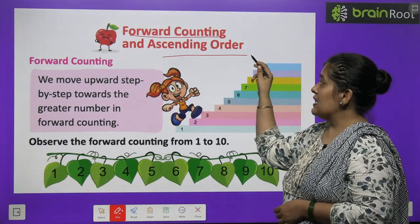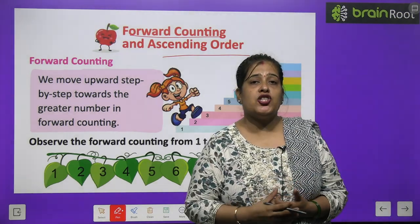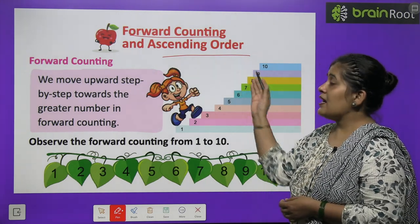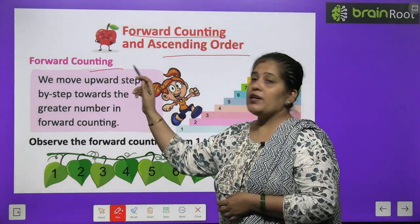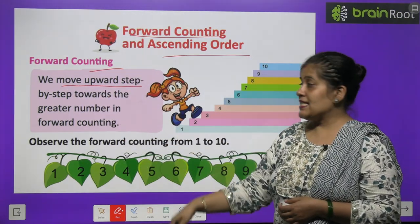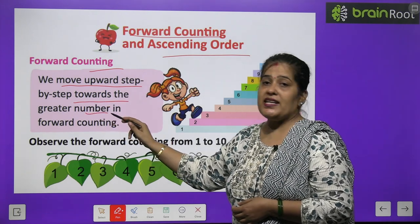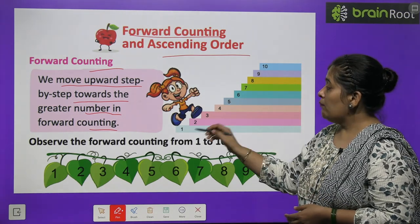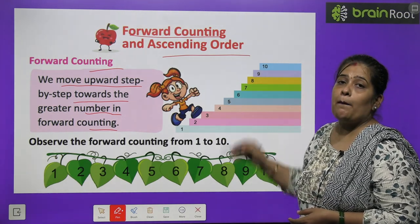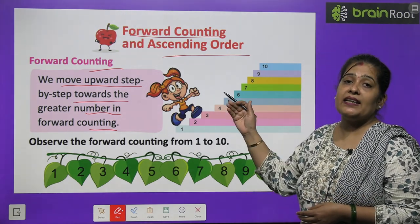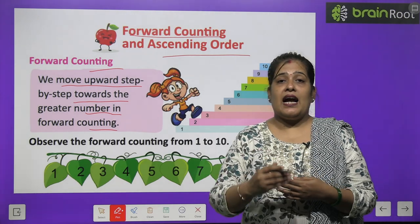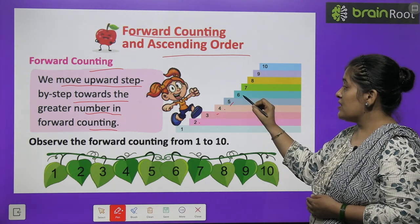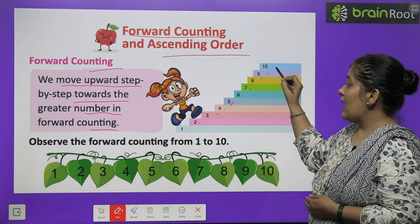Forward counting and ascending order. Forward counting — we move upward step by step toward the greatest number in forward counting. 1, 2, 3, 4, 5, 6, 7, 8, 9 and 10.